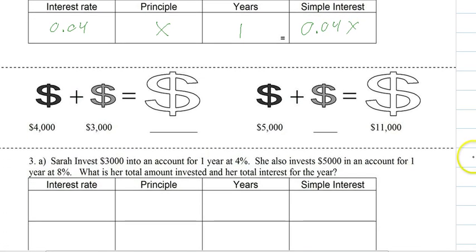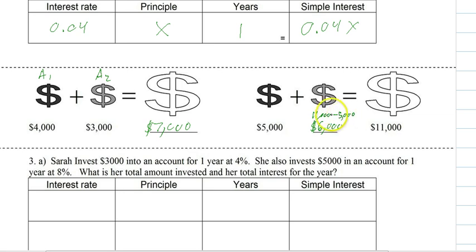Now for part 2: if you have two different accounts and you put $4,000 in one and $3,000 in the other, you have a total of $7,000. Going in reverse, if you know you have $11,000 to invest and you put $5,000 in one account, that leaves $6,000 — you take $11,000 and subtract $5,000. So if you call one amount x, the other is always $11,000 minus x. It's just a way to set it up each time.